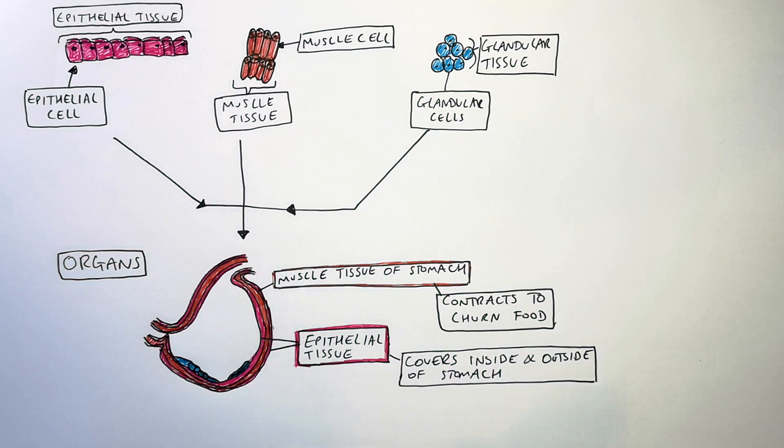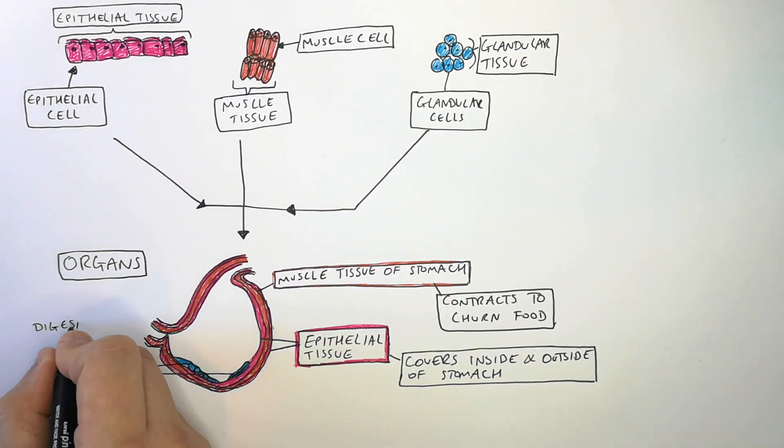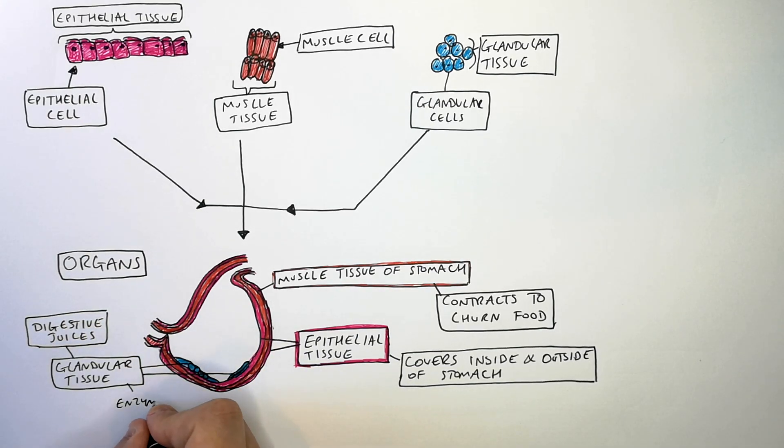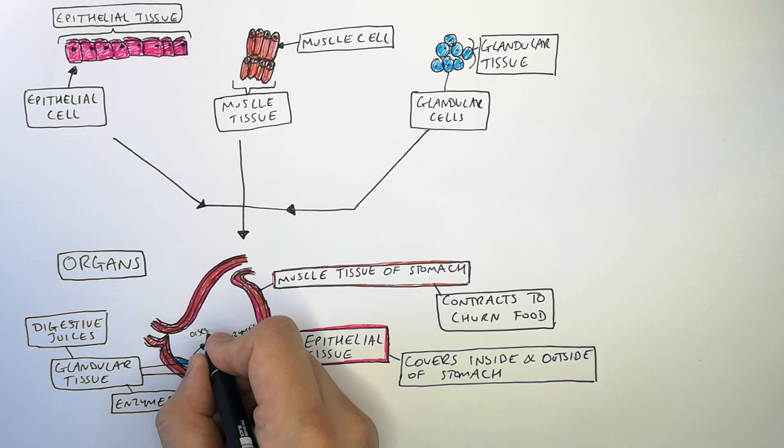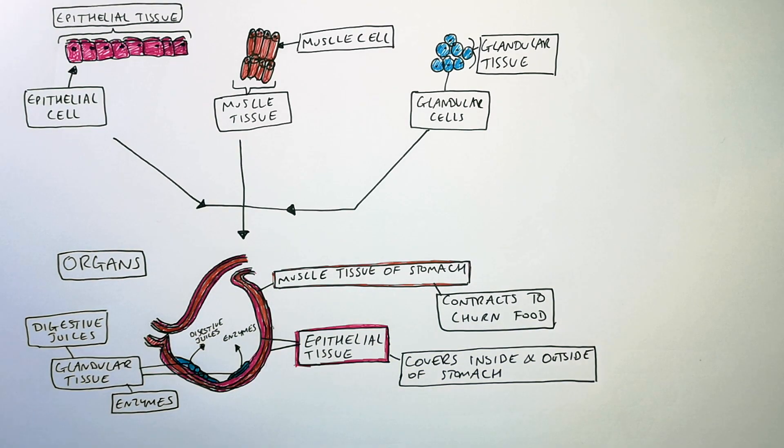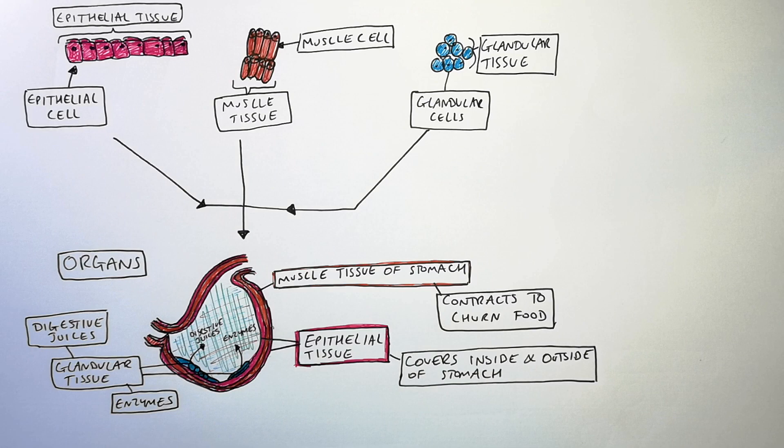The stomach also contains glandular tissue. The glandular tissue produces digestive enzymes and digestive juices. These digestive juices and enzymes are released into the stomach to help digest food. The stomach is one example of an organ within the digestive system.